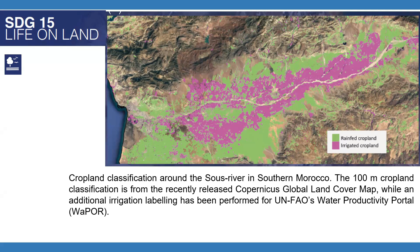This is another example illustrating how Copernicus products can support the Sustainable Development Goals. Related to SDG 15 — Life on Land — we have a crop land classification around the Seuss River in southern Morocco. This is an excerpt of the Copernicus Global Land Cover Map with additional layers of irrigation plots produced by FAO's Water Productivity Portal. This is an interesting rain-fed and irrigated cropland map using satellite information, mainly Copernicus products.